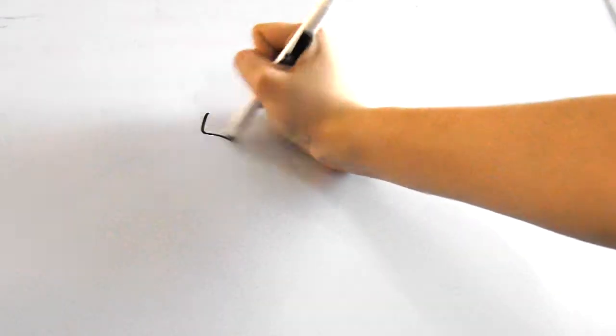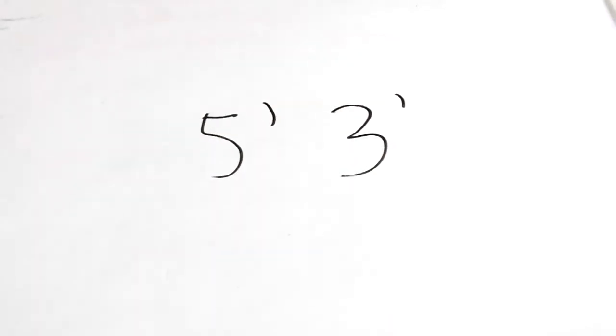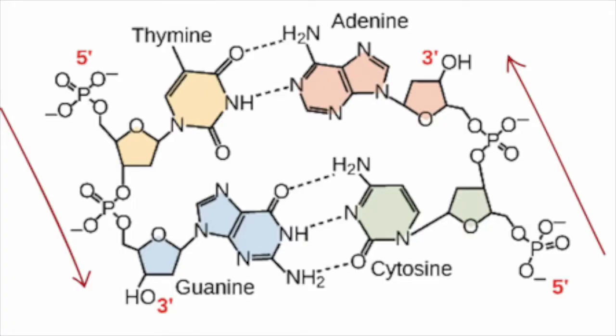So scientists have come up with the terms 5' and 3' to describe the directions of these strands. We say that one of them runs in the 5' to 3' direction, while the other runs in the 3' to 5' direction since they're opposites of each other.